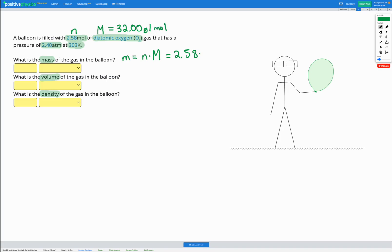So we're going to put that into our equation here. And if we multiply those together, that's going to get 82.6 grams of oxygen in the balloon. Let's check that we got that right. Awesome.